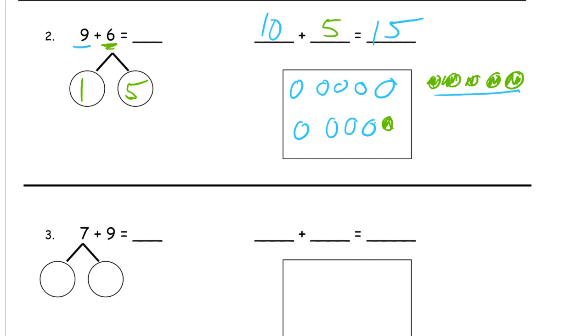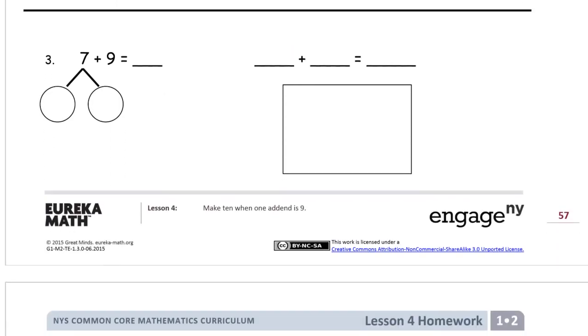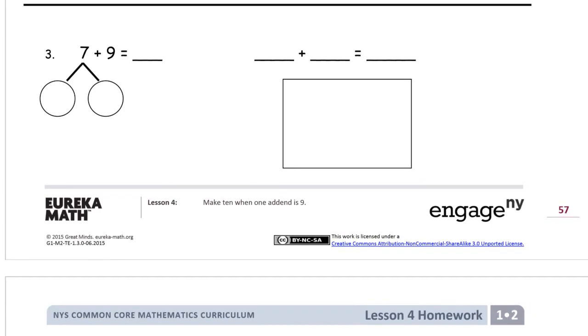This is really the same thing we were doing before. We're trying to make 10s by taking one from the other addend to finish the 10 for the 9.